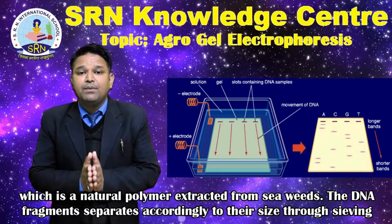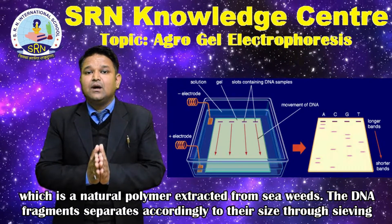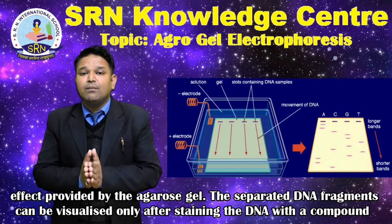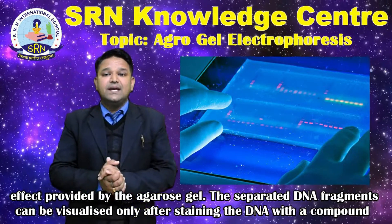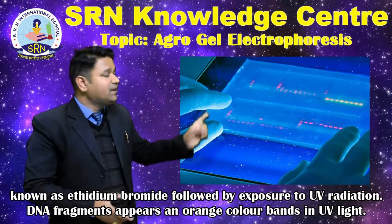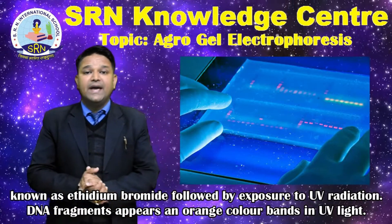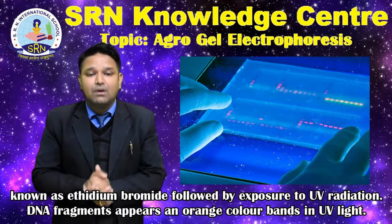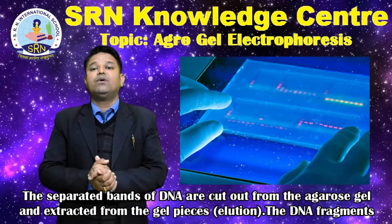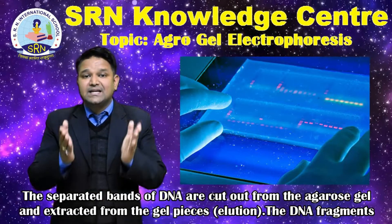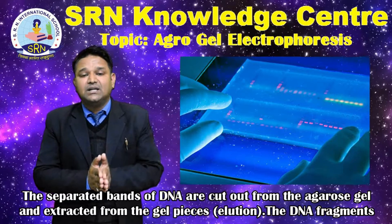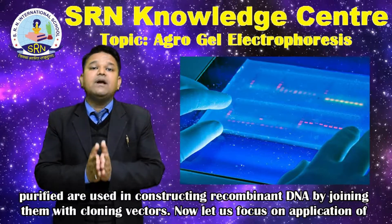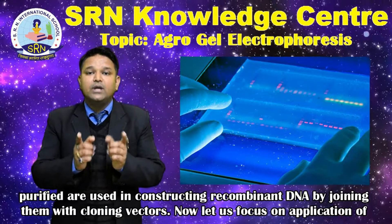The DNA fragments separate according to their size through the sieving effect provided by the agarose gel. The separated DNA fragments can be visualized only after staining the DNA with a compound known as ethidium bromide, followed by exposure to ultraviolet radiation. DNA fragments appear as orange colored bands in ultraviolet light. The separated bands of DNA are cut out from the agarose gel and extracted from the gel pieces, i.e. elution. The purified DNA fragments are used in constructing recombinant DNA by joining them with cloning vectors.